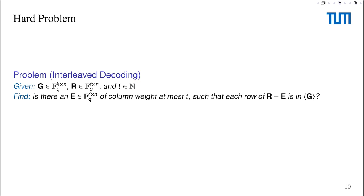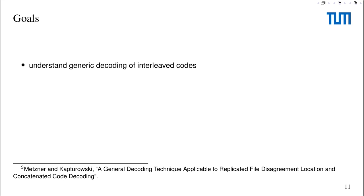In order to be sure of that, we need to understand whether interleaved cryptosystems are indeed secure. To do that, we need to look at the hard problem they are based on. One might state this hard problem as the interleaved decoding problem, which is very similar to the general decoding problem, except here we have a received matrix R and want to determine if there is an error matrix E with column weight at most T. We want to understand how much work it is to solve this problem.